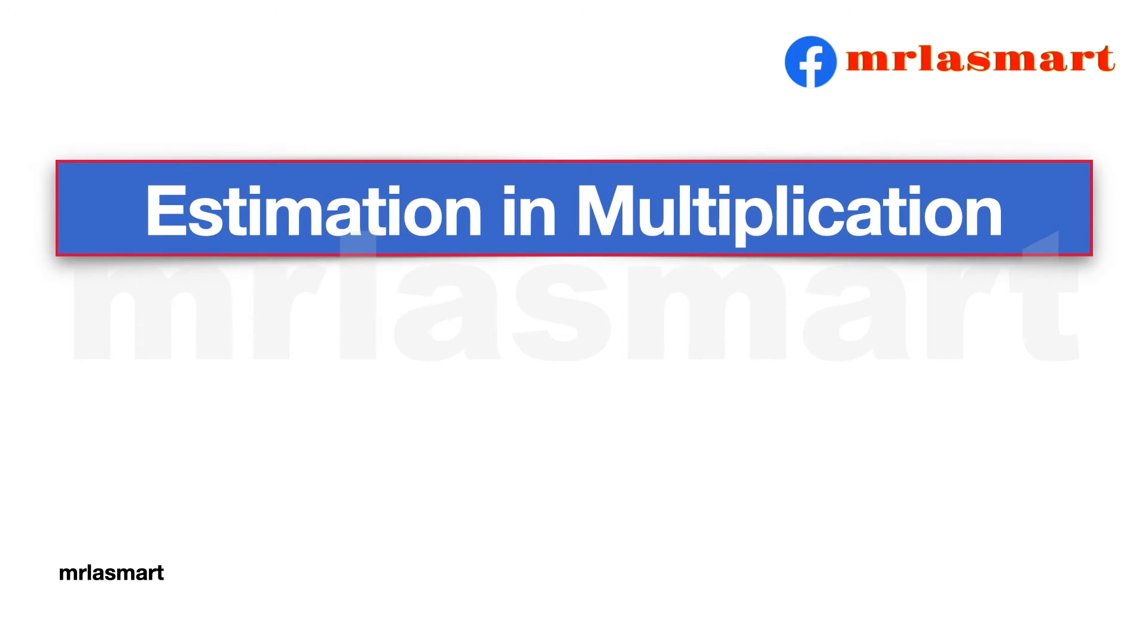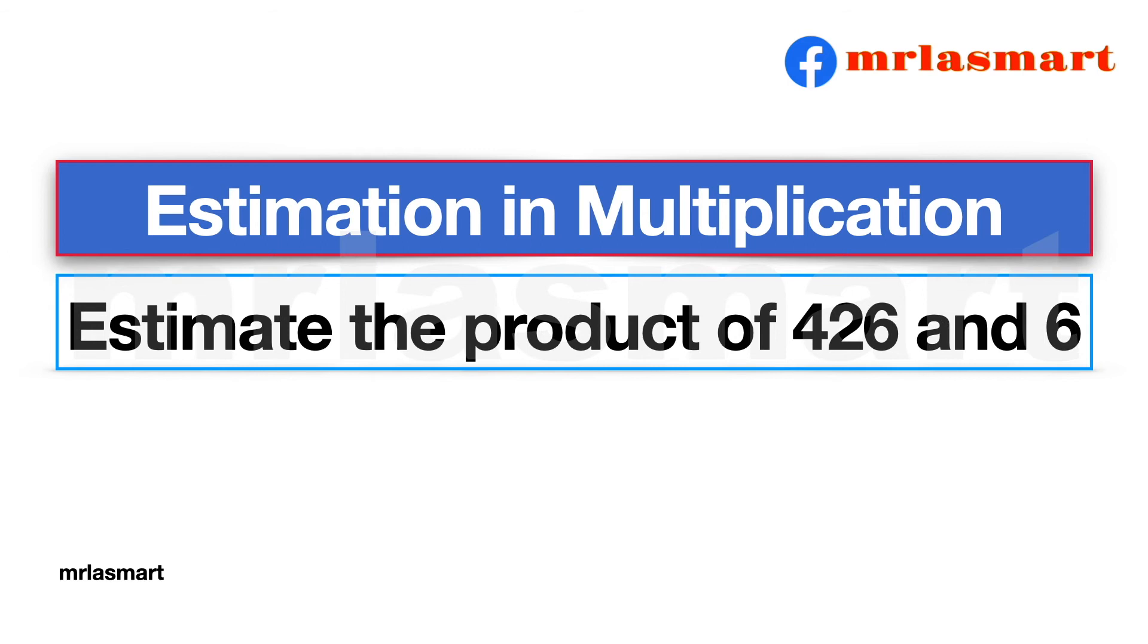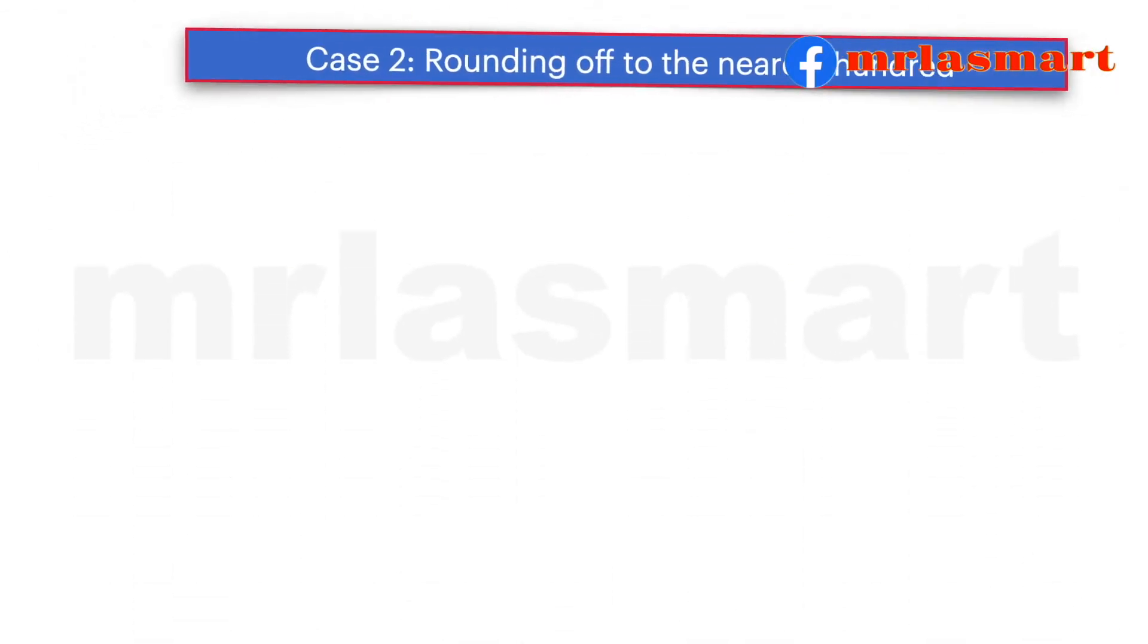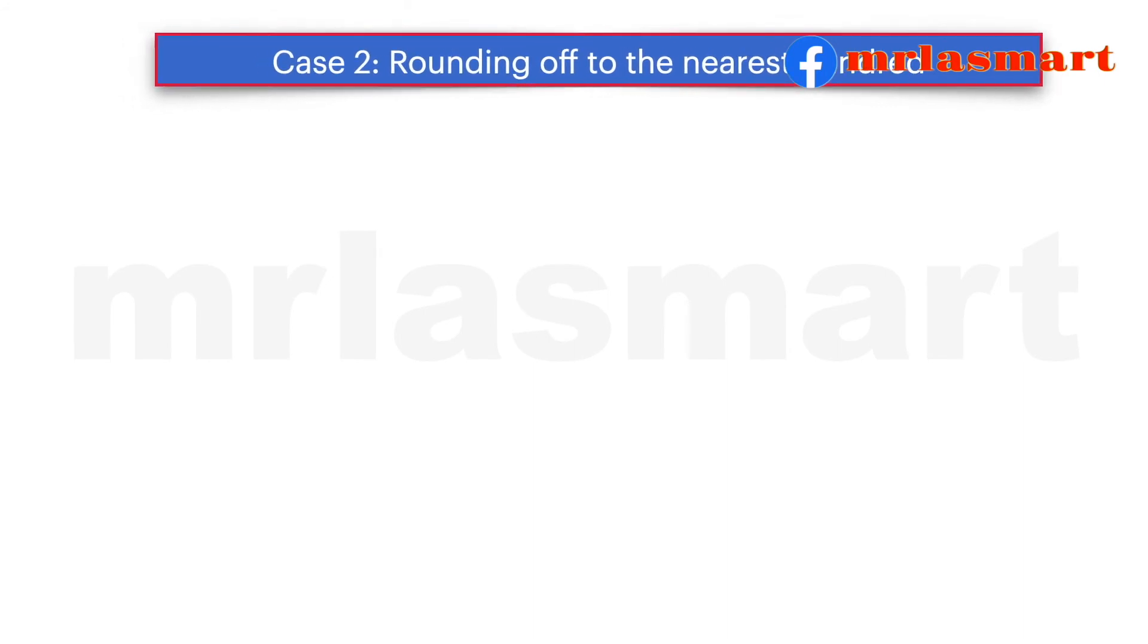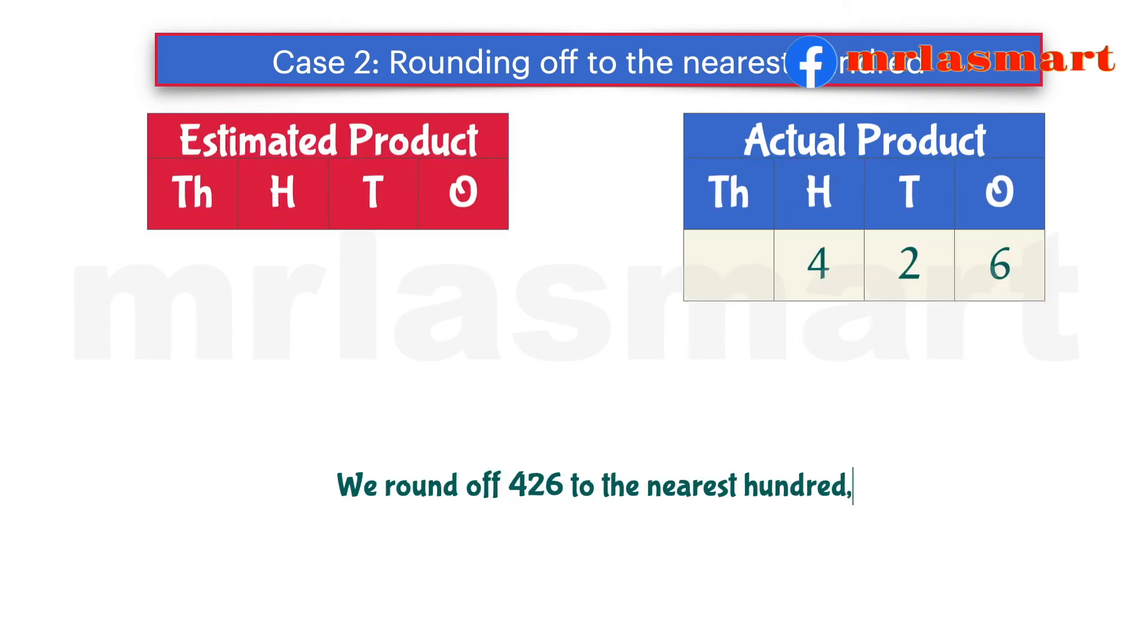Estimation and multiplication. Estimate the product of 426 and 6. We round off 426 to the nearest 100, we get 400.